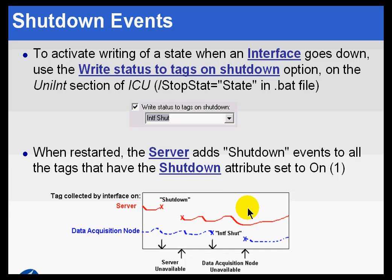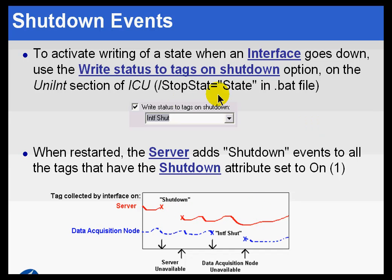For example, tags such as lab input tags, laboratory inputs, or calculations. They're not collected by an interface, so we need some other mechanism instead of this STOP STAT feature — some other mechanism to indicate that there's been a shutdown.